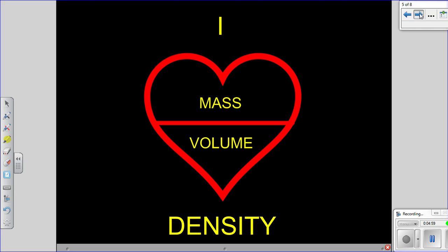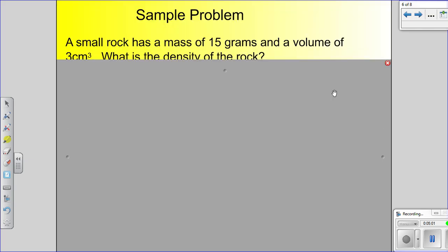Alright, let's work a sample problem here. So this is a sample problem that you could see on a test. It says, a small rock has a mass of 15 grams and a volume of 3 cubic centimeters. What's the density of the rock? We have the information that we need. We have mass right here, 15 grams, and volume, 3 cubic centimeters.